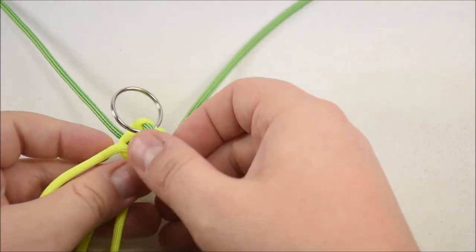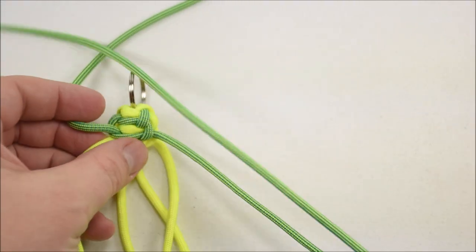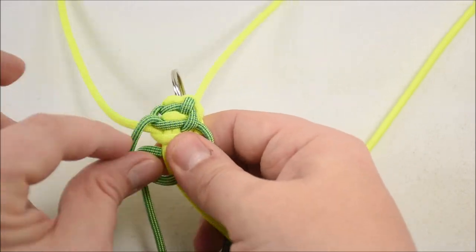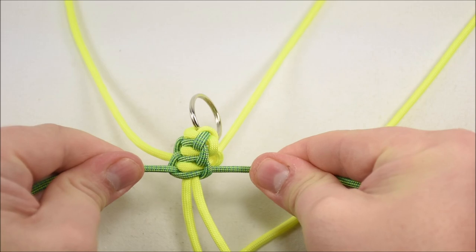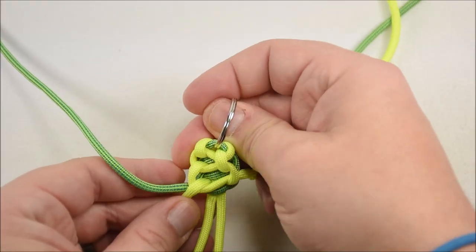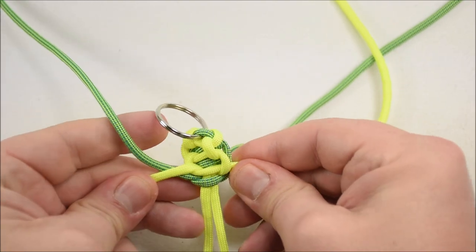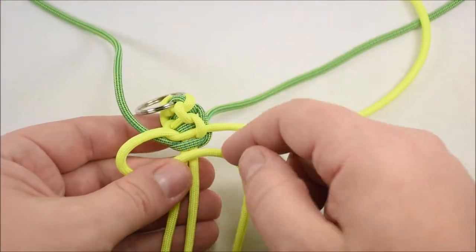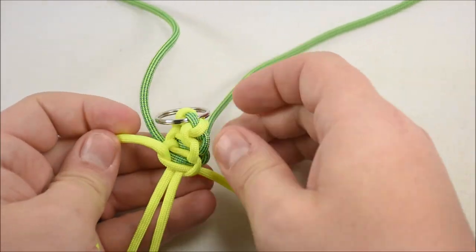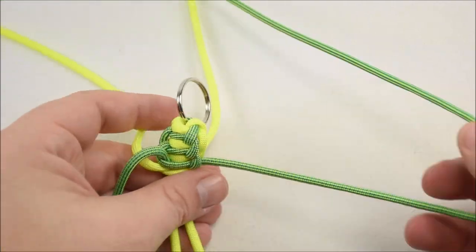Alright. So there's that one. Cinch that up. Flip it over. Bring these down. Get these two guys out of the way. Do your Solomon. Remember, start with the left side over the center strand. Pull it tight. Flip it over. Bring these yellows down. I know it kind of looks funny right now. You want to kind of tighten this up as you go, to make everything look nice and uniform.